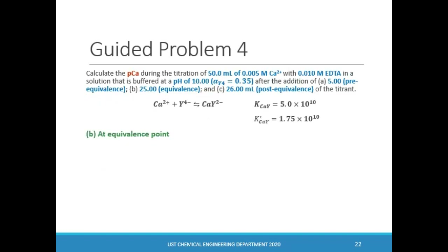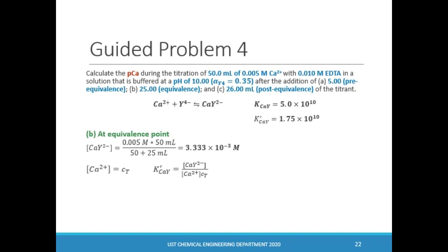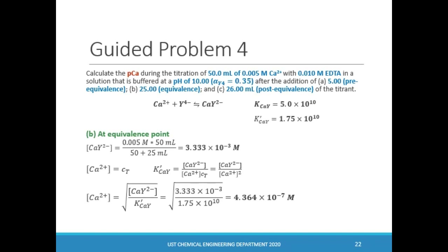At the equivalence point, we assume that almost all of the calcium is already converted to calcium-EDTA complex. First, calculate the concentration of the metal complex formed by dividing the moles of calcium by the total volume, now 75 mL, to get 3.333 × 10⁻³ molar calcium-EDTA complex. Note that at the equivalence point, the amounts of free metal ion and EDTA are equal. Using the K' expression and isolating Ca²⁺, then substituting known values, we get a calcium concentration of 4.364 × 10⁻⁷ molar. Getting the negative logarithm of this value, we get a pCa value of 6.36.